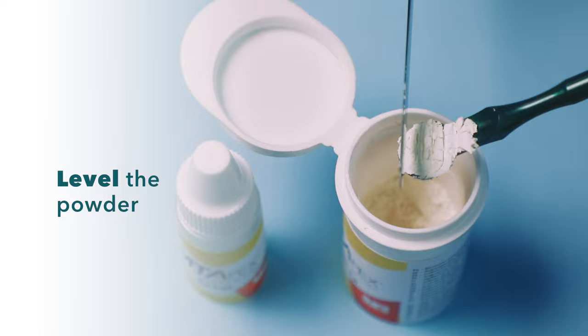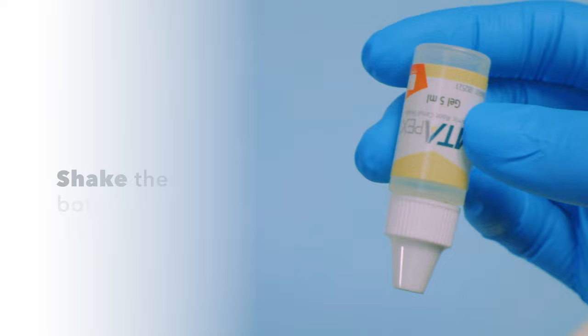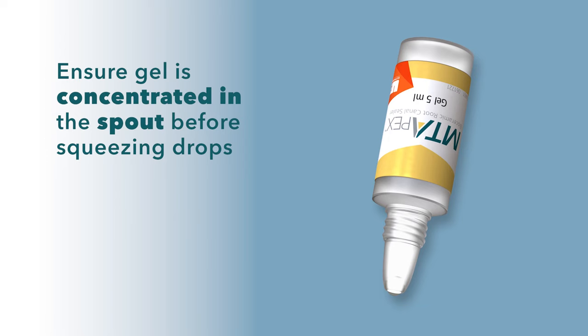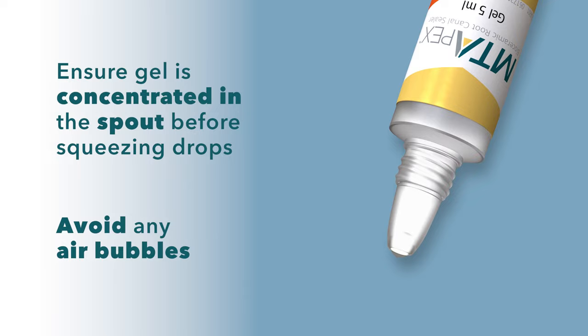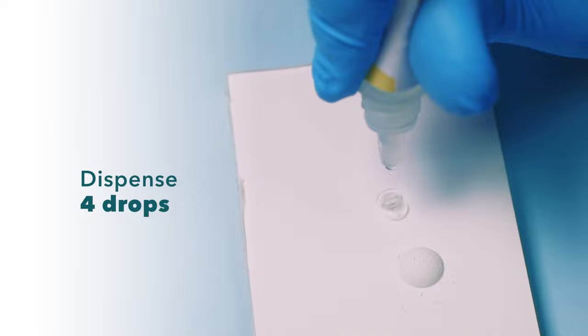To dispense the gel, shake the bottle three times. Ensure all the gel is concentrated in the spout of the bottle before squeezing drops out. Try to avoid any air bubbles. Dispense four drops of the MT apex gel next to the powder.